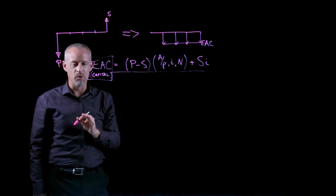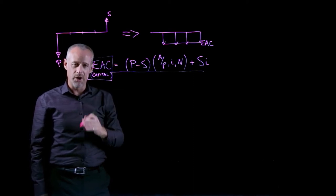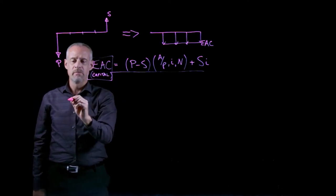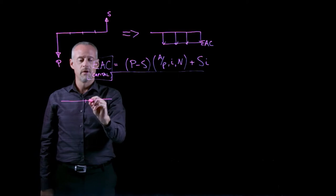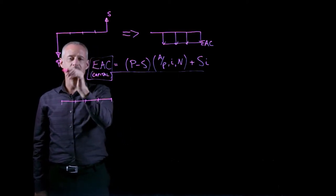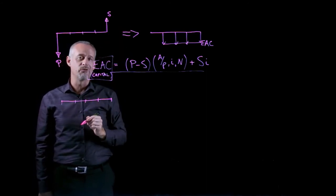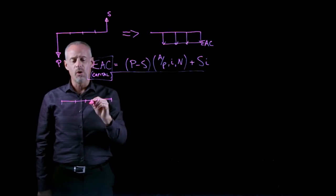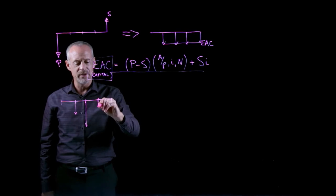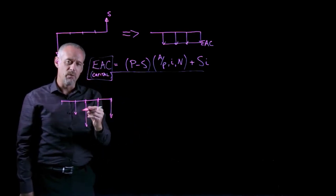Now, this is one component of equivalent annual cost. Most problems have another component of equivalent annual cost, and that relates to other things that occur during the time of ownership. So yes, we buy this asset at time t equal to zero. We sell it at, in this case, n equal to four. But as we own it, we may incur other expenses.